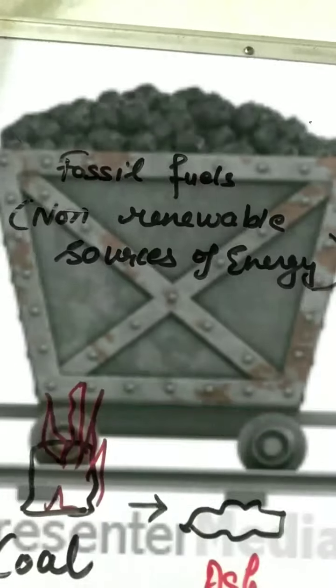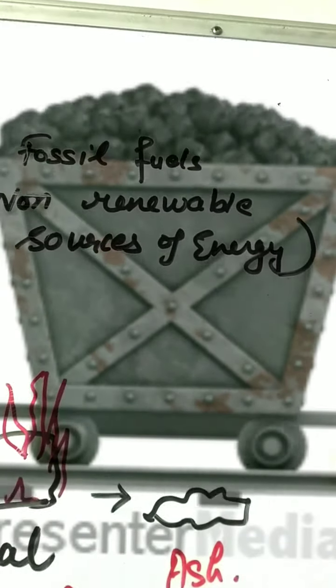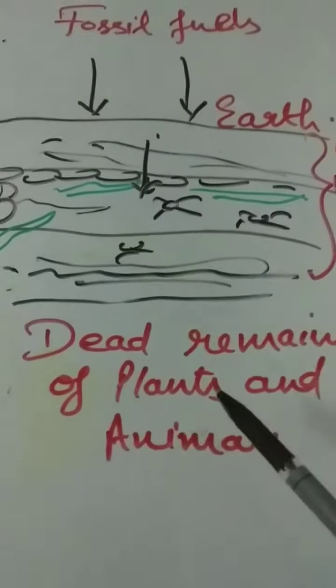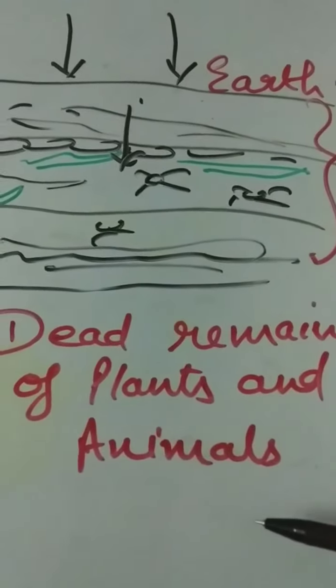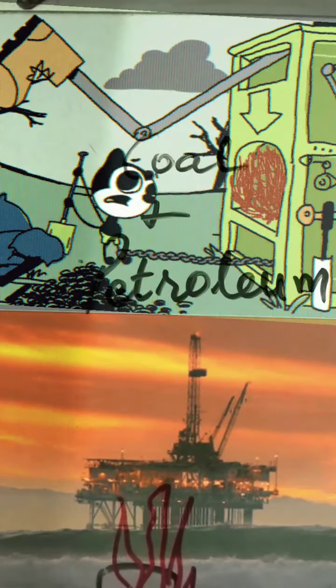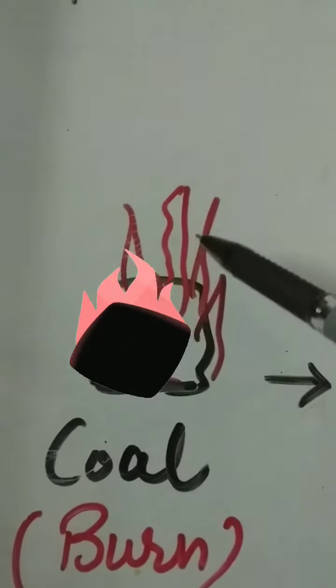We will continue with fossil fuels. Fossil fuels are also known as non-renewable sources of energy. Fuels that are obtained from the dead remains of plants and animals buried millions of years ago under the earth are called fossil fuels. Examples of fossil fuels are coal and petroleum. When fossil fuels like coal and petroleum are burned, they release energy.